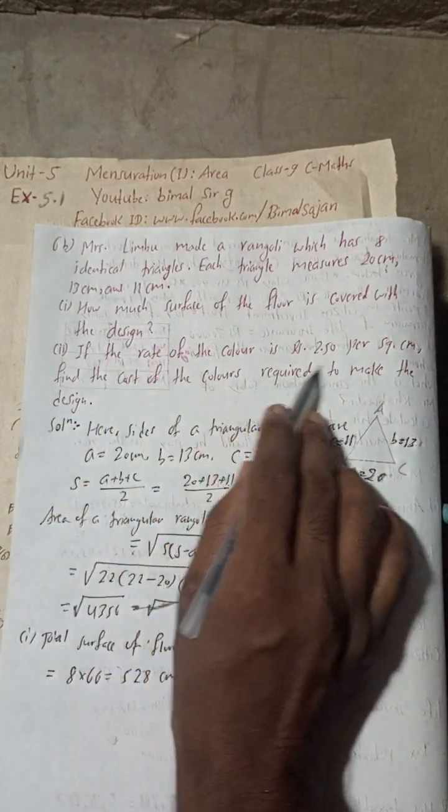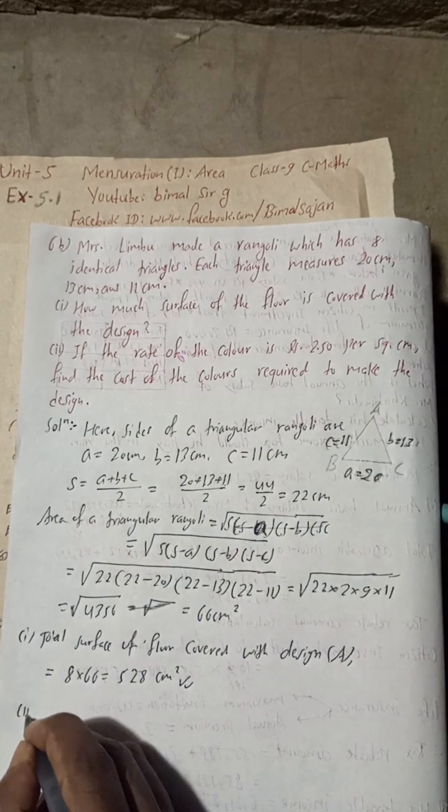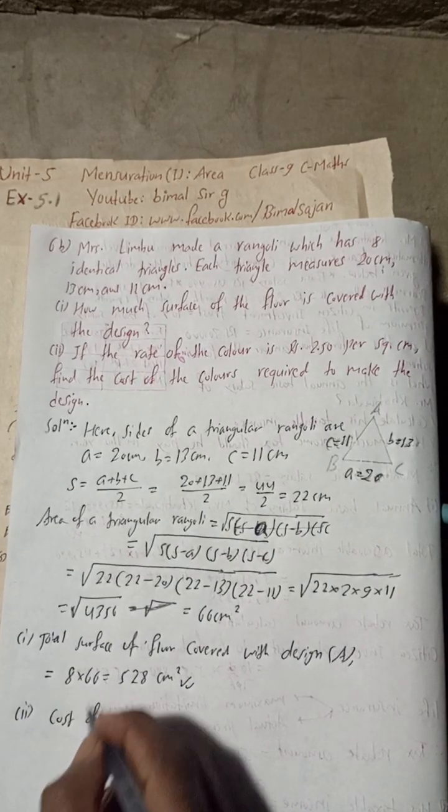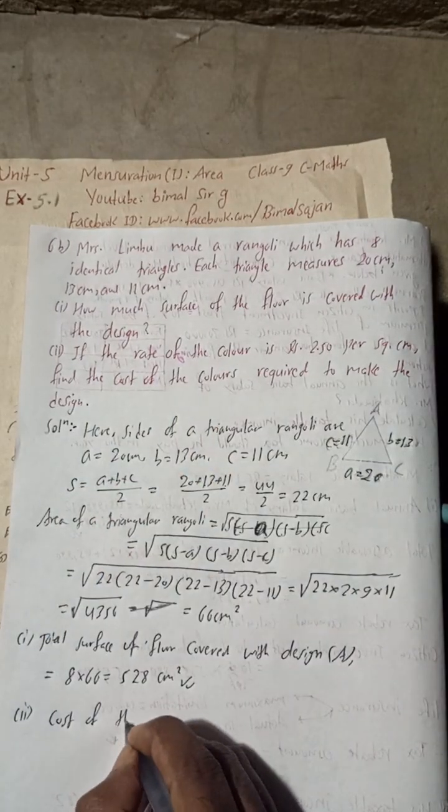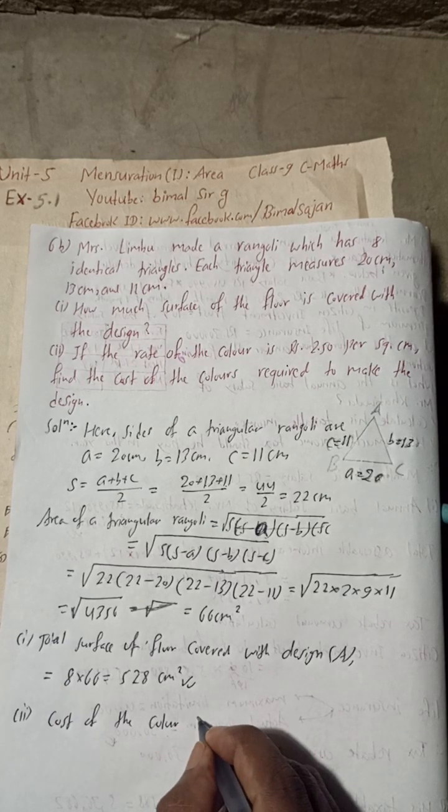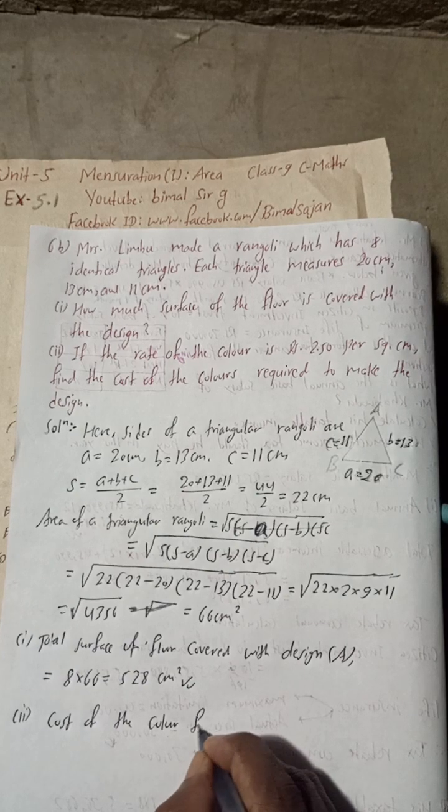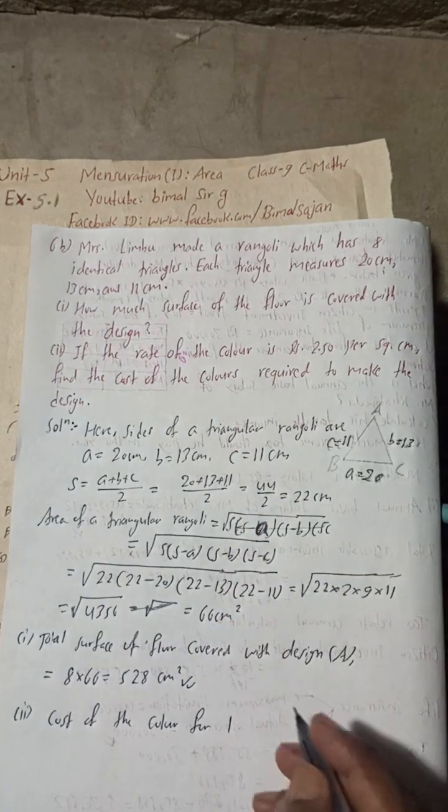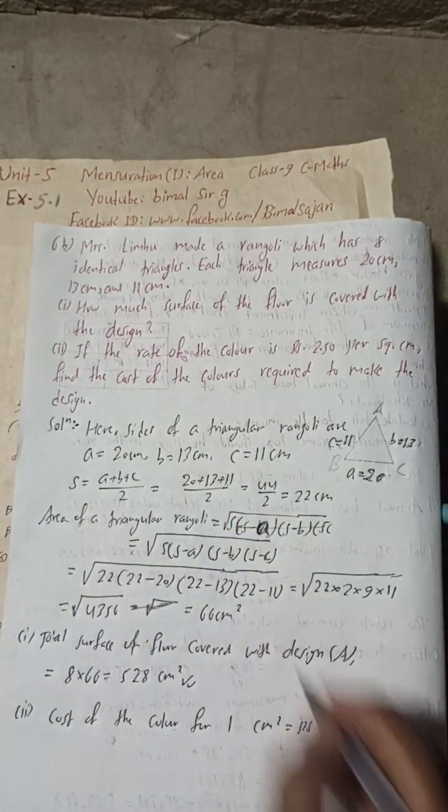Now, if the rate of the color is this much per square cm, we can write: cost of the color for 1 cm² = Rs 2.50.